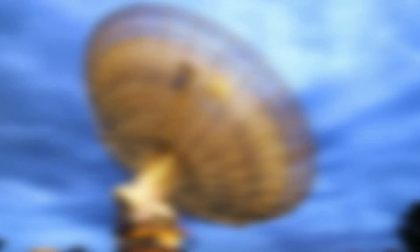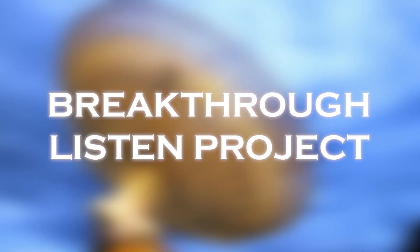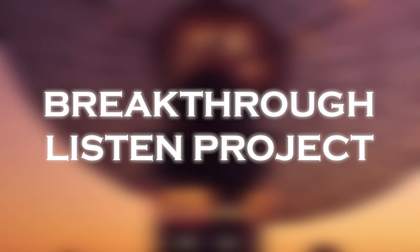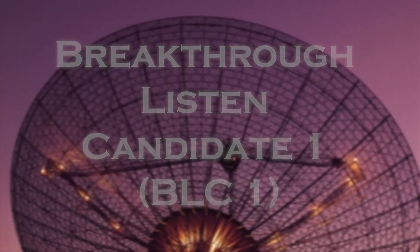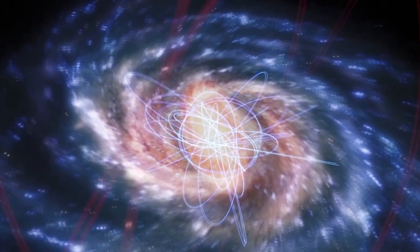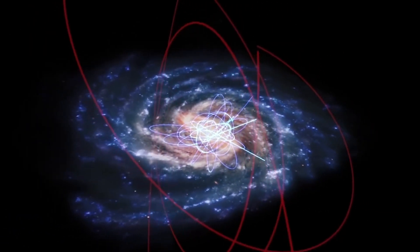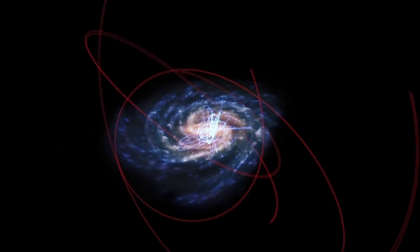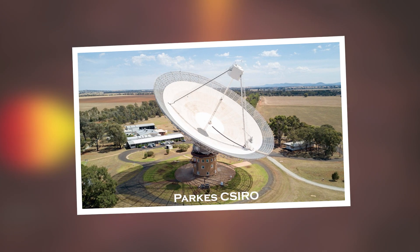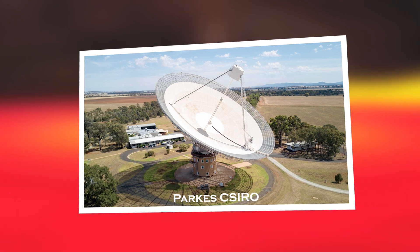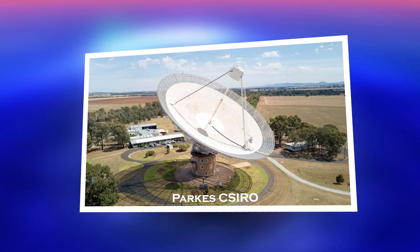The groundbreaking Breakthrough Listen project, dedicated to searching for extraterrestrial communication in the universe, has named this signal Breakthrough Listen Candidate 1, BLC-1. The project, which has approximately $100 million in funding, has used thousands of hours of observation with state-of-the-art telescopes around the world. The signal was detected by the Parkes Observatory radio telescope in New South Wales, Australia. This telescope was observing the region of Proxima Centauri, the closest star to our Sun.